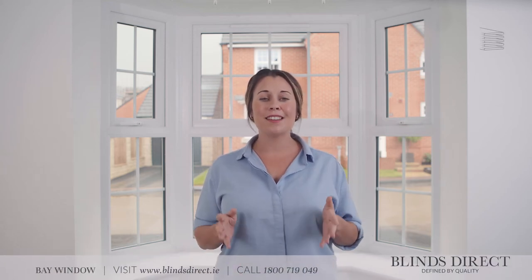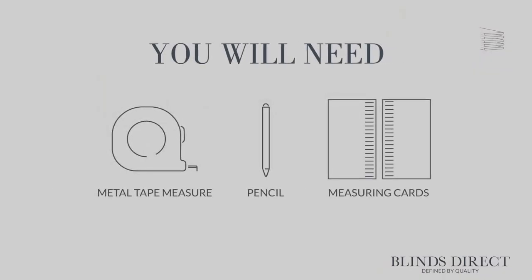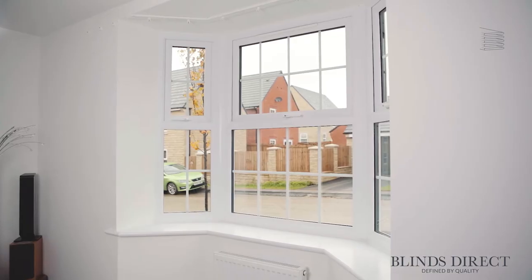Hiya, I'm Jess. Measuring for your new bay window blinds is quick and simple with Blinds Direct. All you will need is the following: a metal tape measure, a pencil and two Blinds Direct measuring cards. Throughout this video we will be taking all of our measurements in centimetres. Today we're going to learn how to measure a standard angled bay window like this one behind me.